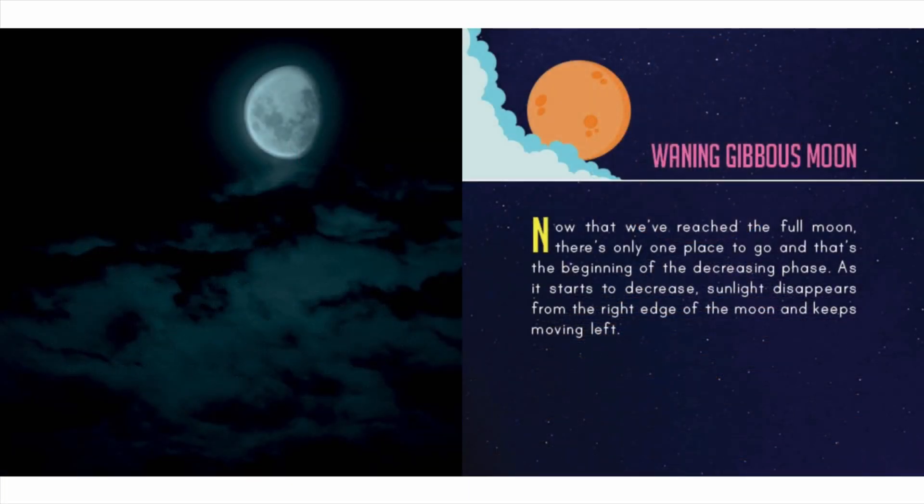Waning gibbous moon: now that we've reached the full moon there's only one place to go, and that's the beginning of the decreasing phase. As it starts to decrease, sunlight disappears from the right edge of the moon and keeps moving left.